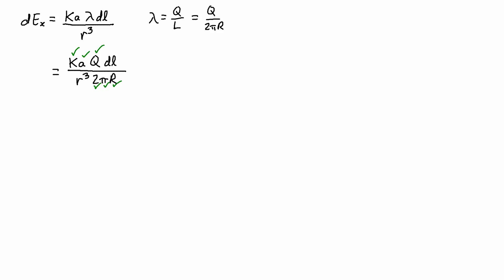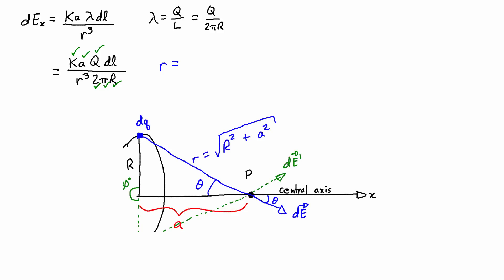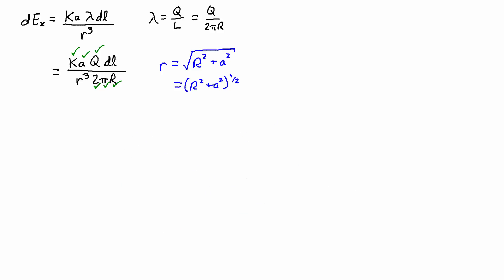So actually, the last thing that I need to do is to actually investigate how I can express r in terms of the other variables that are constants. And so if you look at the original diagram, remember, r was equal to the square root of capital R squared plus a squared. And essentially, this is R squared plus a squared to the power of 1 half. And if I cube that, then I'm just going to get 3 halves. So r cubed is equal to R squared plus a squared to the power of 3 halves.